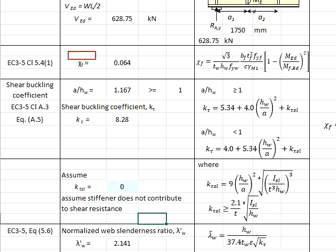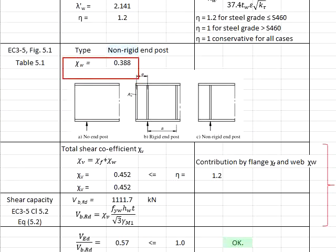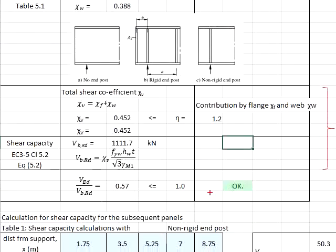Then, we get the summation of chi_F and chi_w to obtain the actual shear coefficient for the member. Multiplying through, you will get the shear resistance of 1111 kN. Compare the shear resistance against the shear loads. It is found that only 57% of the capacity is used. That means the shear resistance is considered acceptable.